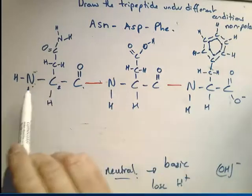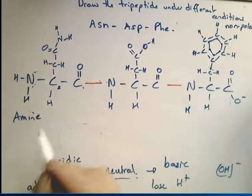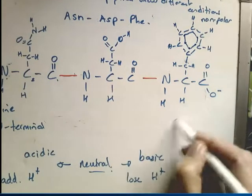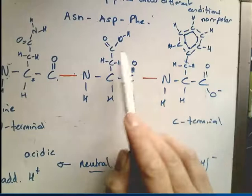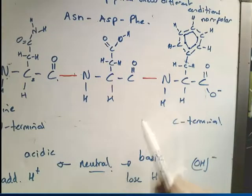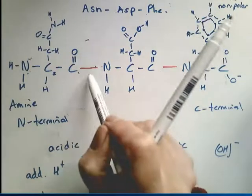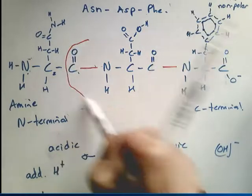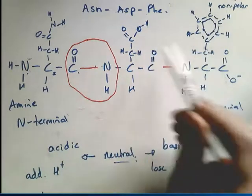The amine group on the end of the chain is called the N-terminal, and the carboxyl group on the other end is called the C-terminal. When circling peptide bonds, note that the bond itself is only special because of the groups on either side of it, so you need to circle the whole C-O-N-H unit. There are two peptide bonds in this tripeptide.